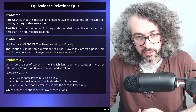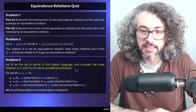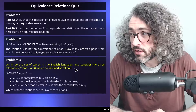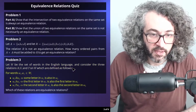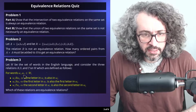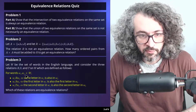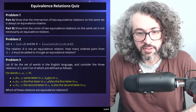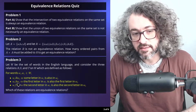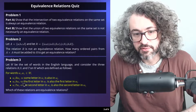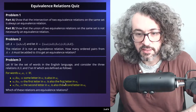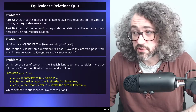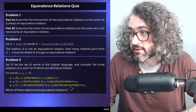Problem 3: Let W be the set of words in the English language, and consider three relations R, S, and T on W. R is the relation that says word 1 is related to word 2 if some letter in word 1 is also in word 2. S is the relation that says word 1 is related to word 2 if the first letter in word 1 is also the first letter in word 2. T is the relation that says word 1 is related to word 2 if the second letter in word 1 is also the second letter in word 2.